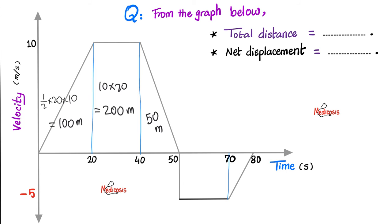How about the surface area of this rectangle? Length times width. Here is 20, here is negative 5. 20 times negative 5 is negative 100 meters. Then the area of this triangle: half the base — half of 10 is 5. Multiply this by negative 5 is negative 25 meters.